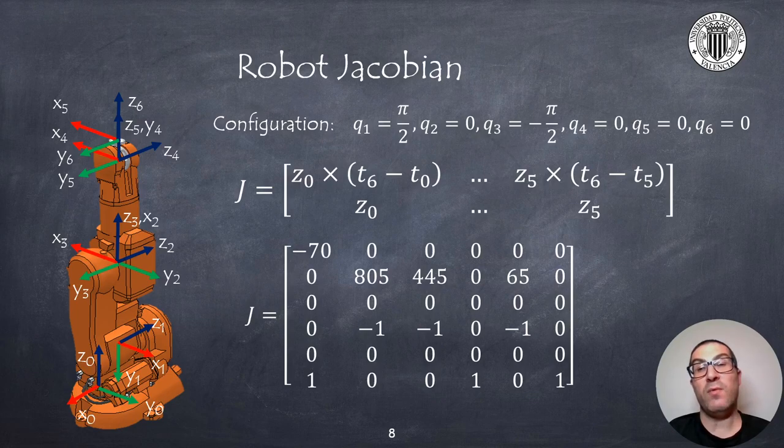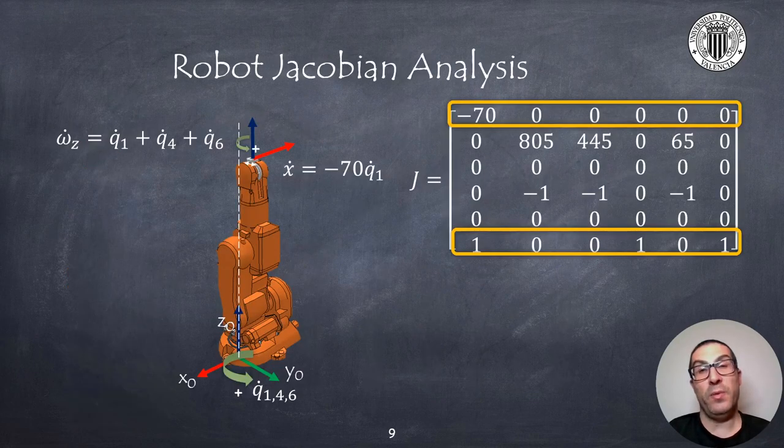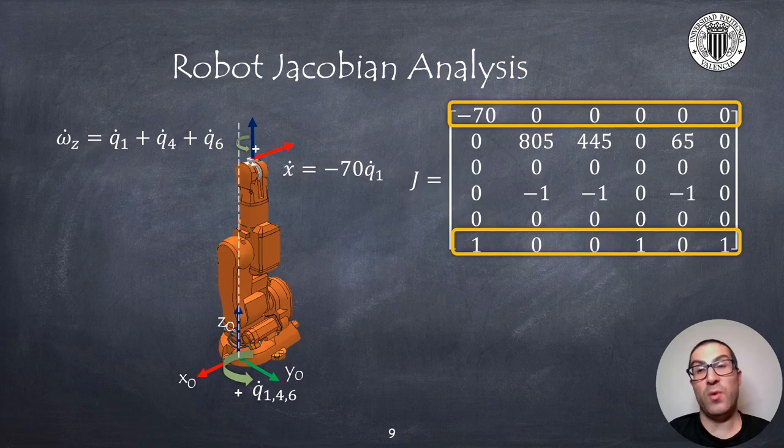For this particular configuration and robot then the resulting Jacobian is the one shown here. Now we will analyze the result of this Jacobian. We observe that the first row of this Jacobian, which is describing the linear velocity in the x coordinate, depends only on the velocity of the first joint.